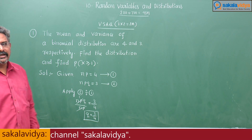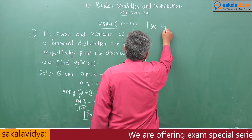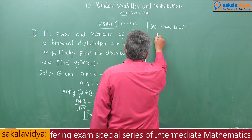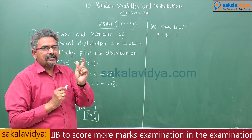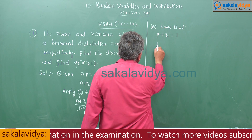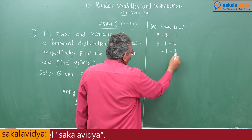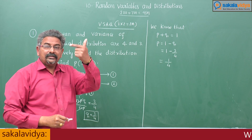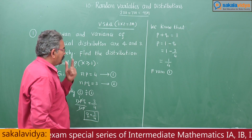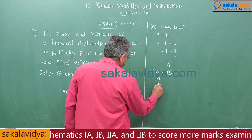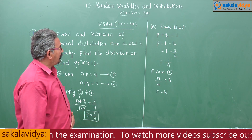Since q is not our parameter — our parameter is p — we need to find p. We know that p + q = 1, where p is the probability of success and q is the probability of failure. So p = 1 − q = 1 − 3/4 = 1/4. Now substituting p into equation 1: n × (1/4) = 4, so n = 16. We now know both parameters: n = 16 and p = 1/4.